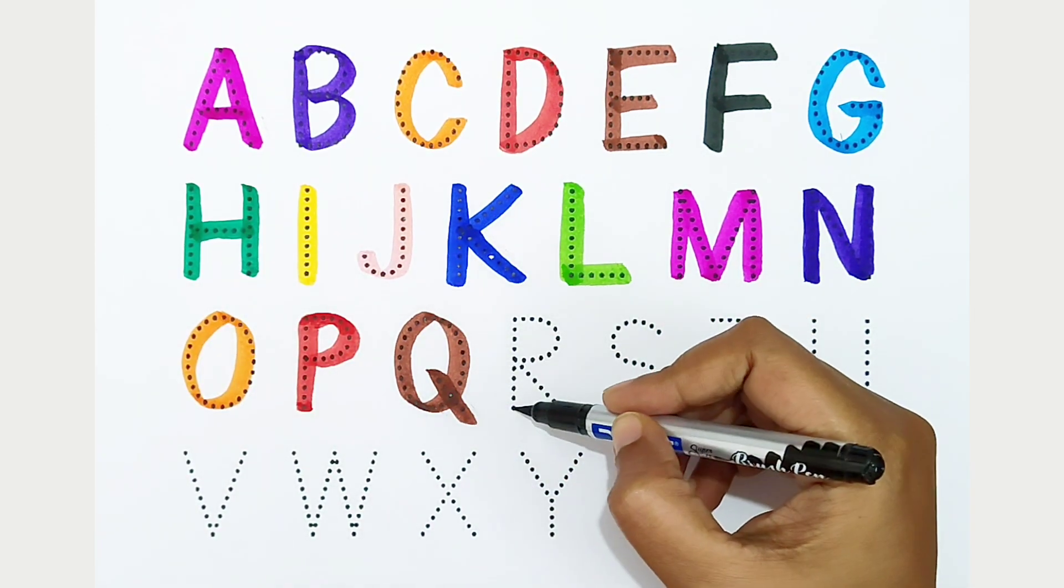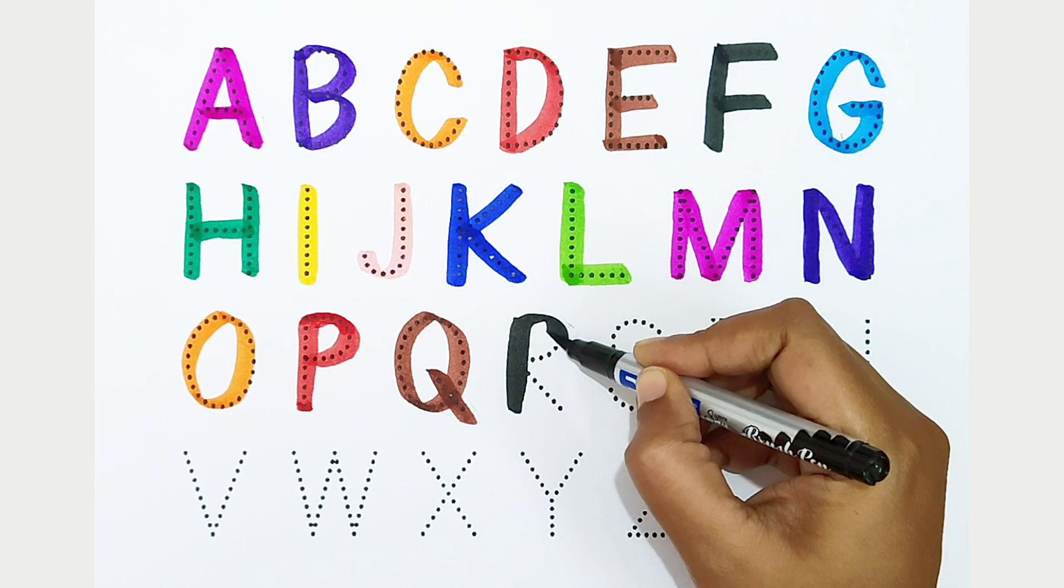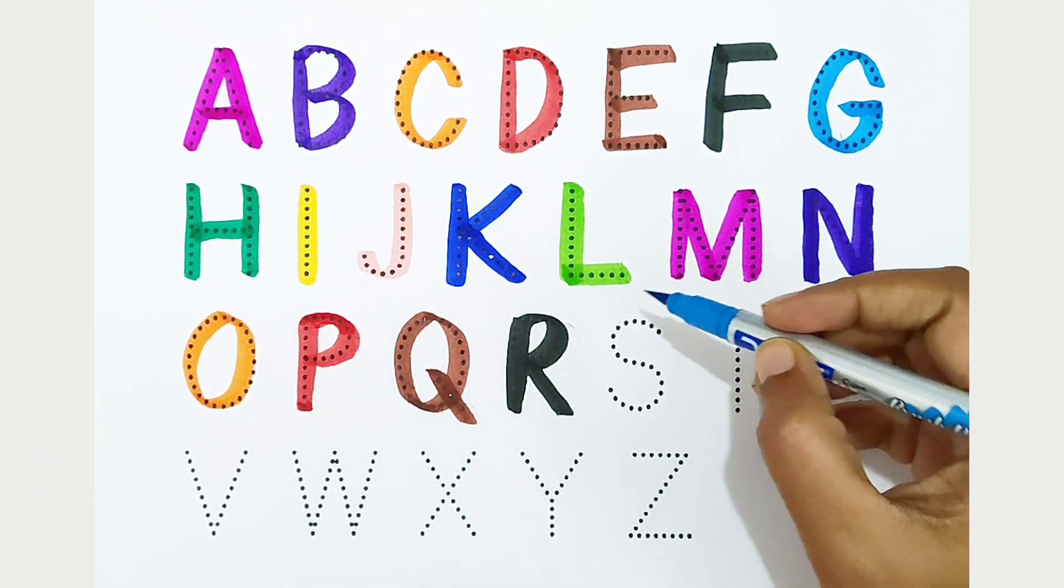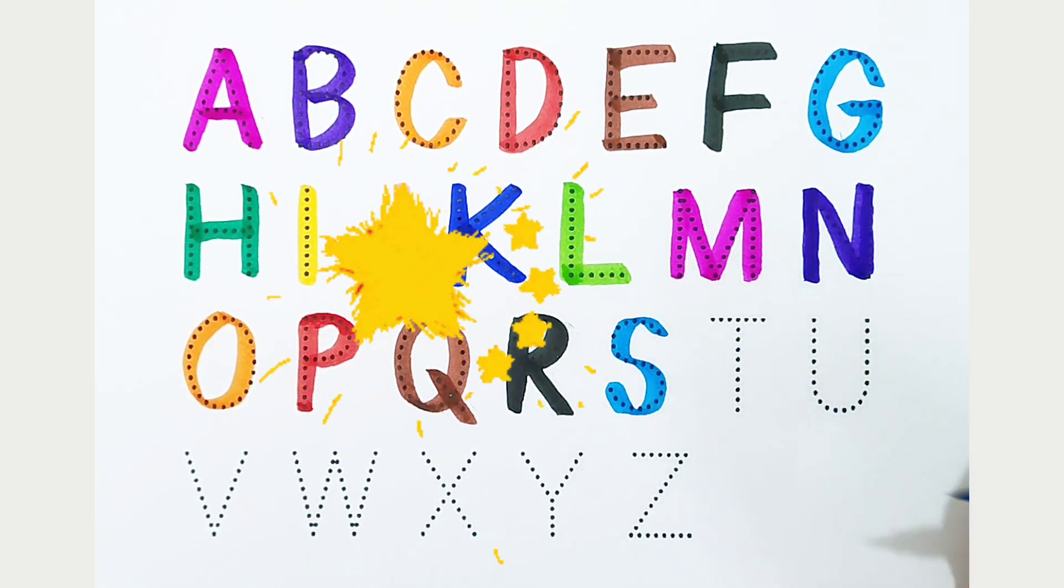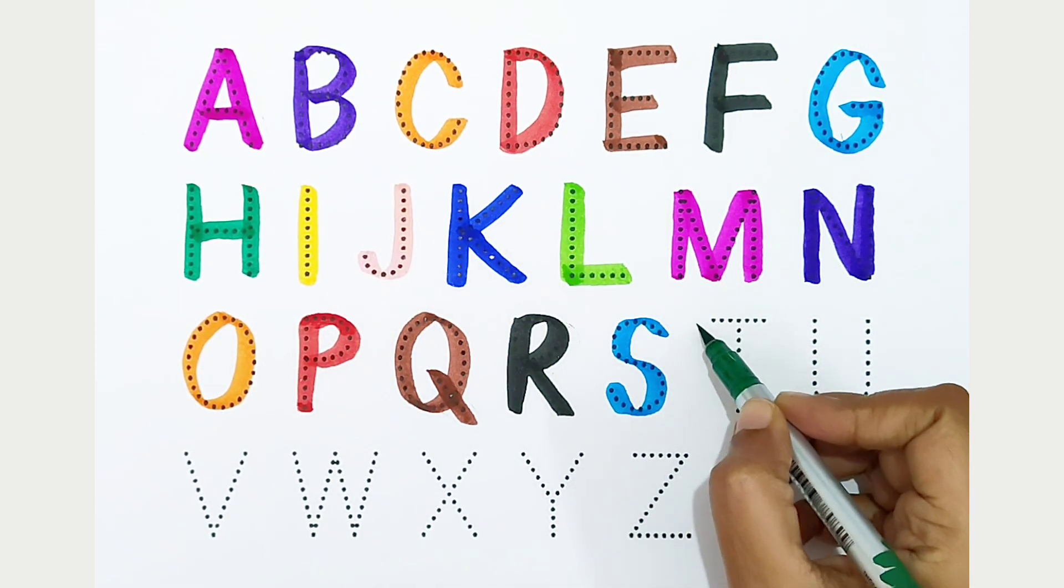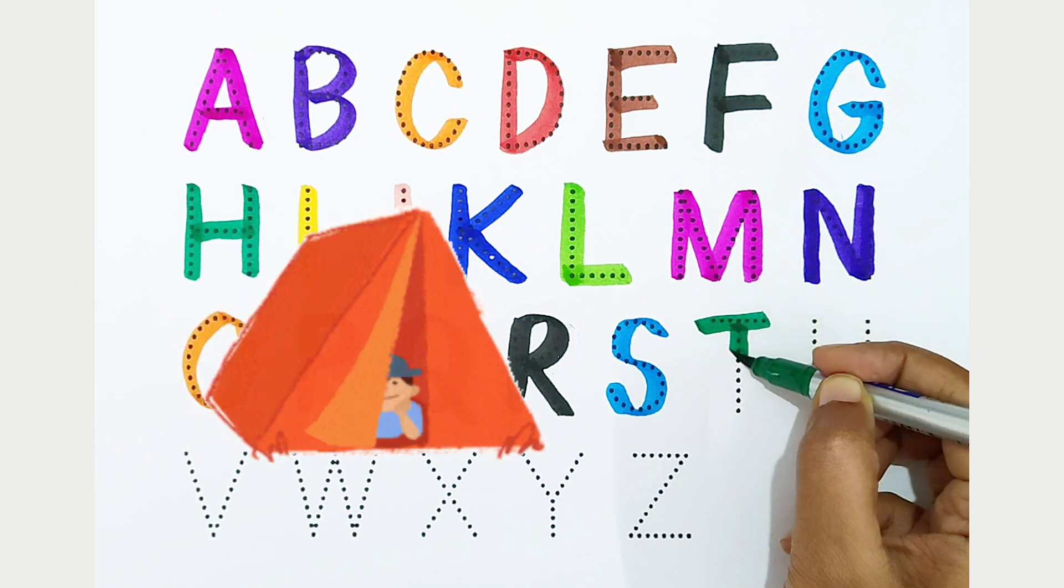R - black color. R is for rainbow. S - light blue color. S is for star. T - dark green color. T is for tent.